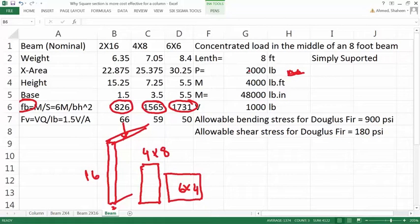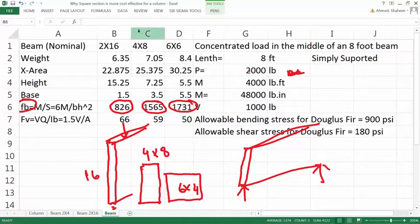And on a 6x6, three times more than 2x16 because of the same load. So the more rectangular the shape is, then the more it will be efficient as a beam. So the more square section will be less efficient as a beam.